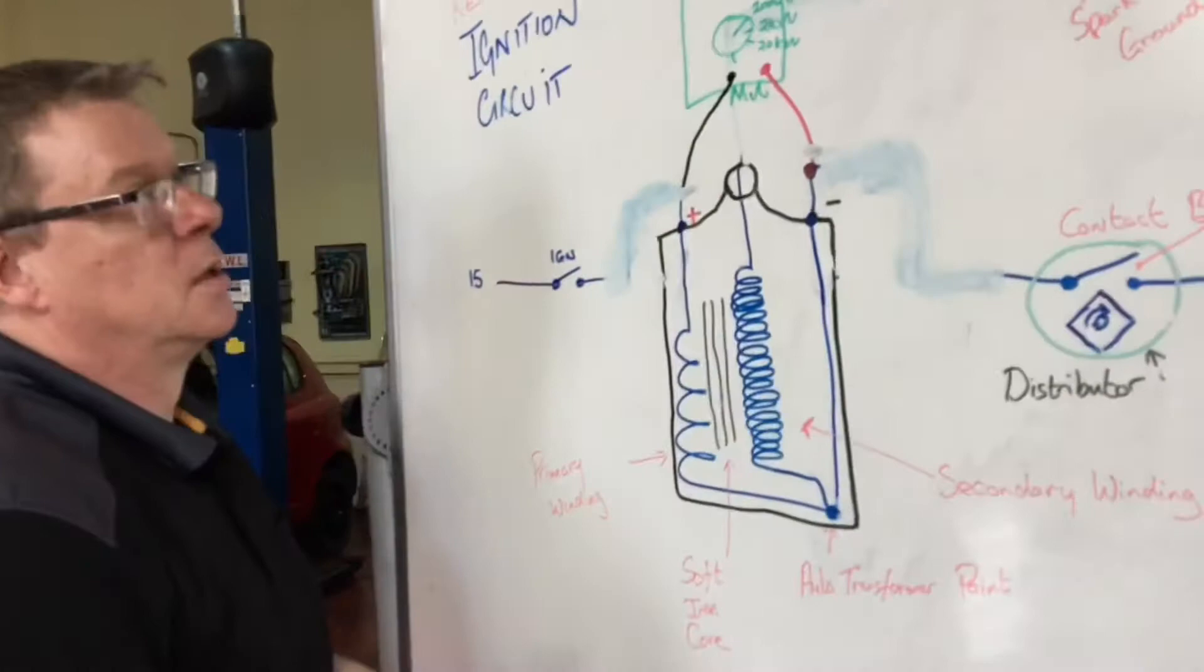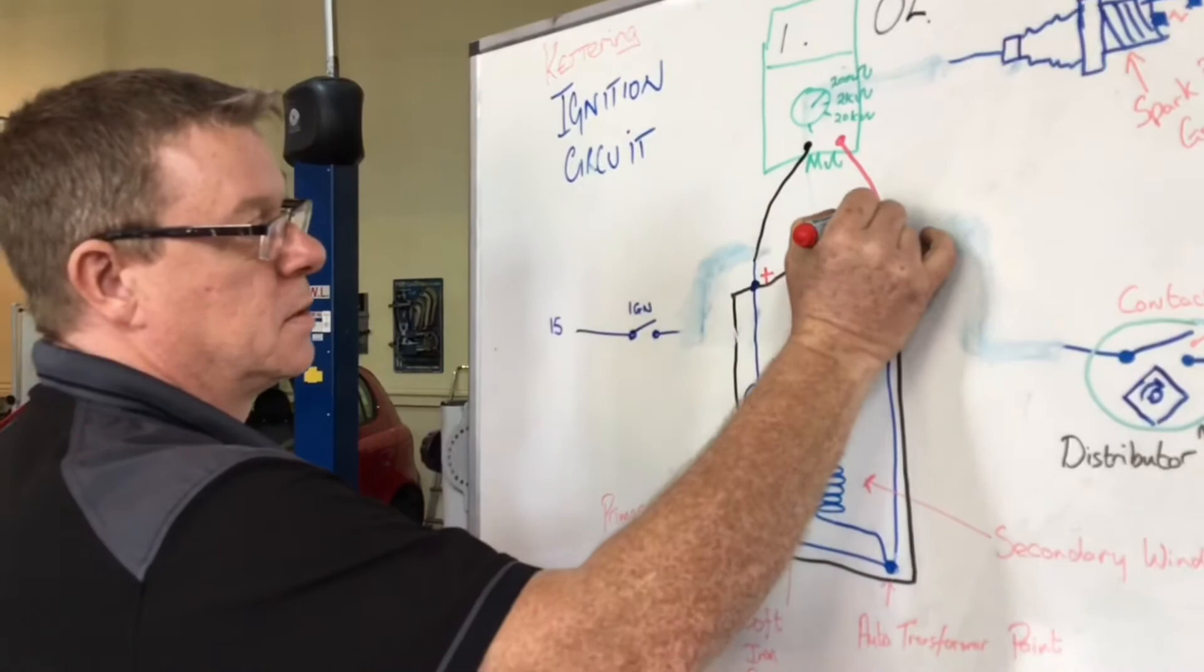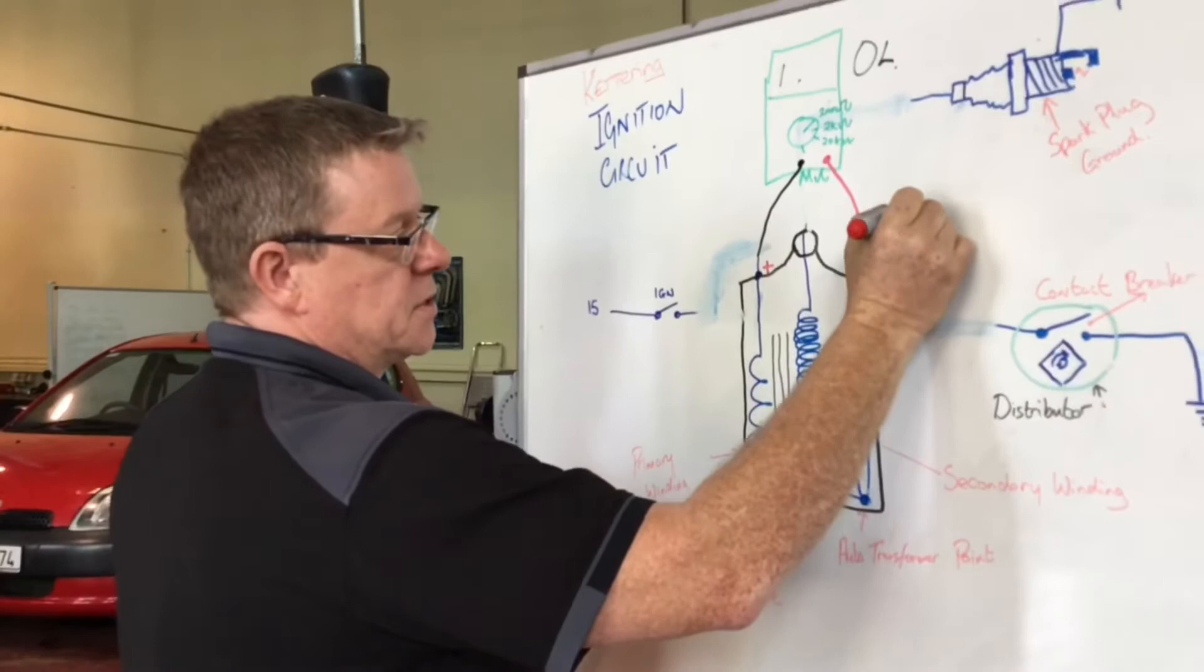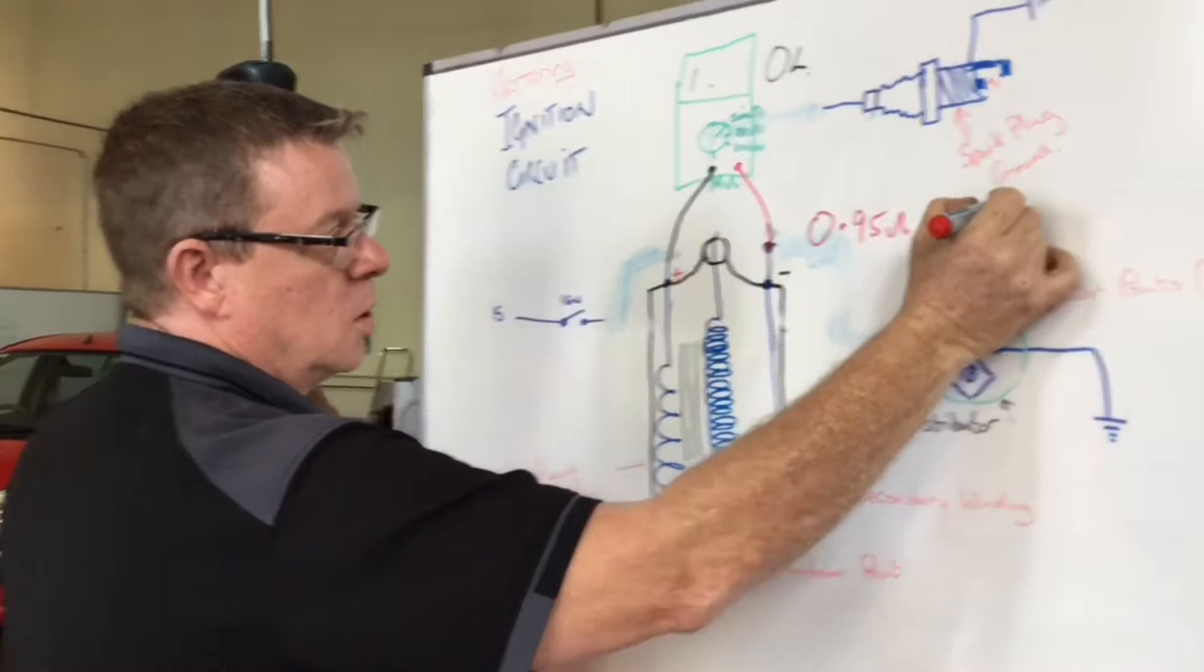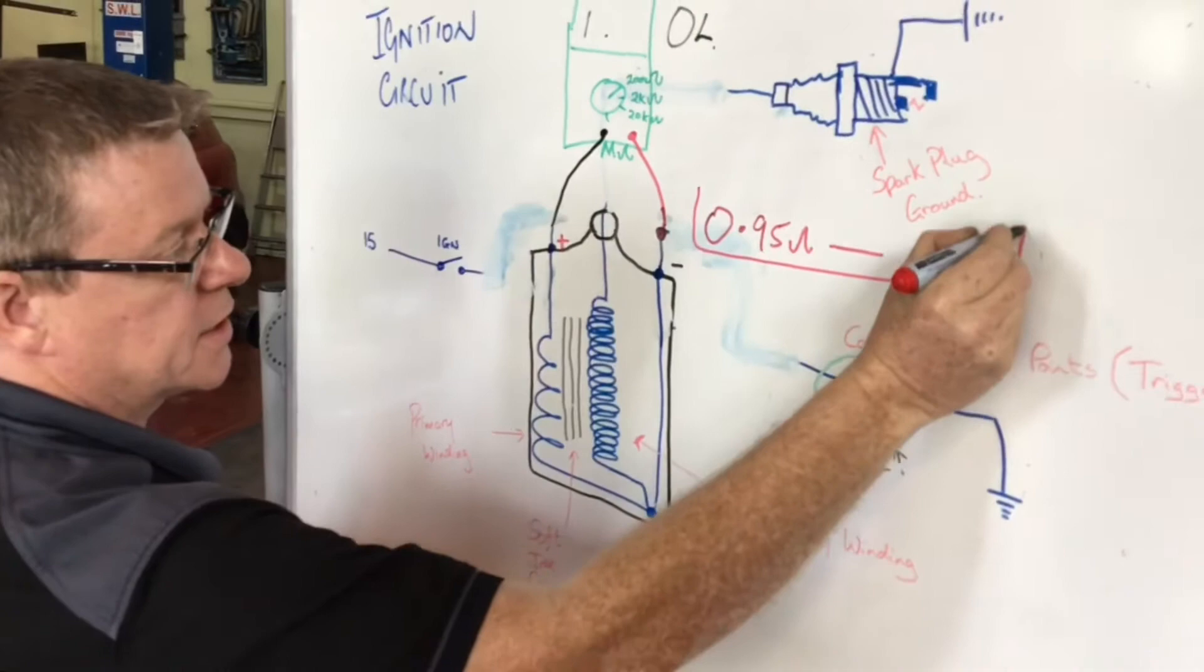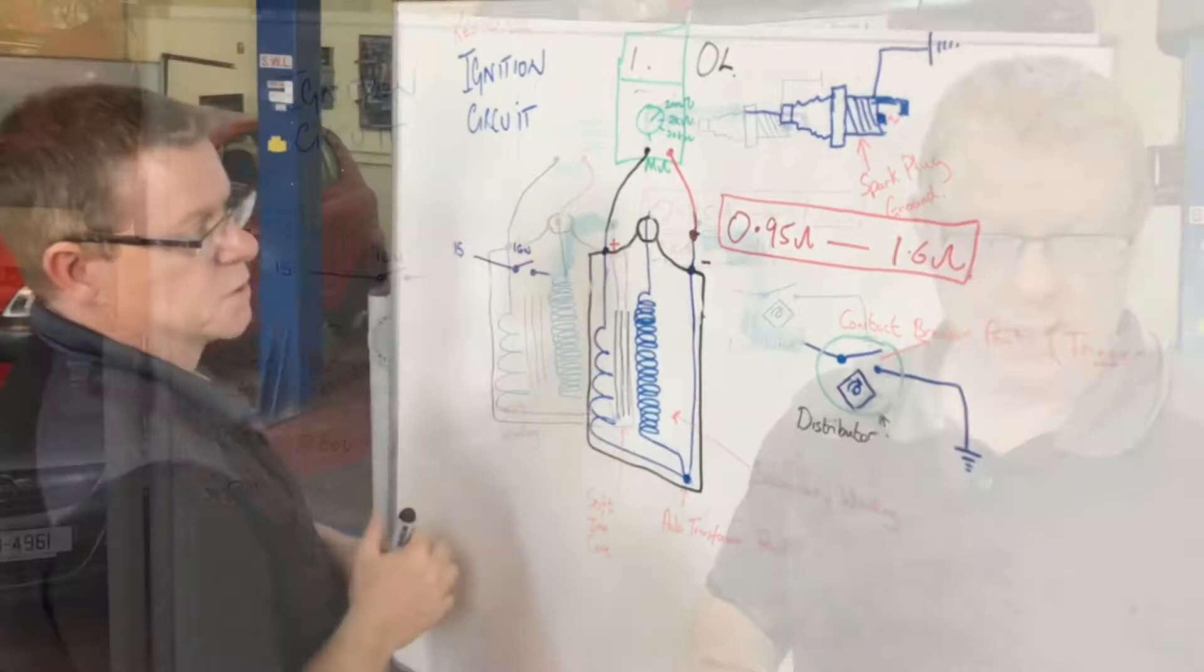So we're connected up now, we've zeroed out, and we're going to read a resistance. And remember, from our specs, it said the primary winding resistance was anywhere from 0.95 of an ohm up to 1.6 of an ohm. So once we fall inside that range, we're good. Our primary winding is good.